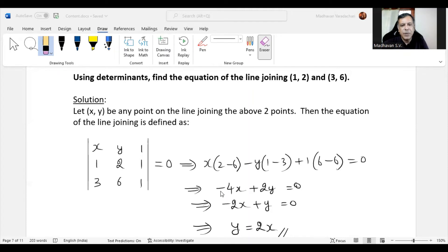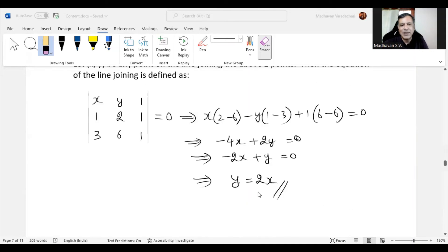If we further simplify we get -4x + 2y = 0 and if we divide both sides by 2 we get -2x + y = 0 which means y = 2x that is the desired equation.